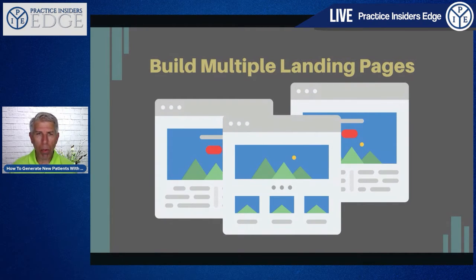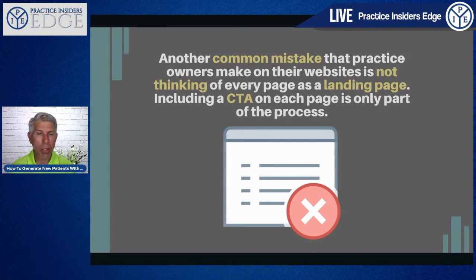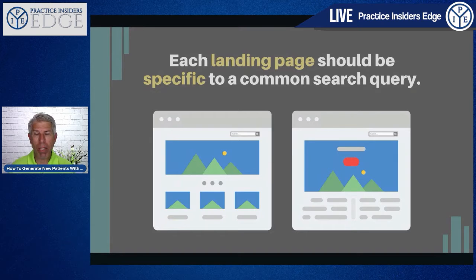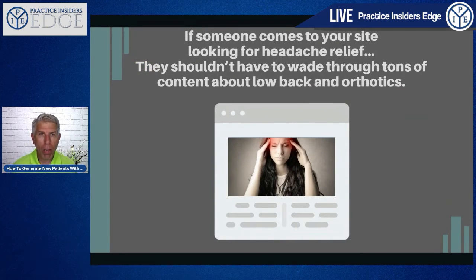Build multiple landing pages. A common mistake practice owners make is not thinking of every page as a landing page with a call to action. On your services or products pages, you should have a call to action to learn more about each service or product. Each landing page should be specific to each common search query — shoulder, neck, low back, knee, pregnancy, acupuncture, dry needling, orthotics — each page with its own search engine optimization and schema markup. It can be confusing if you try to pack too much information on a single page. If someone comes looking for headache relief, they shouldn't wade through content about low back and orthotics — let them read about headaches and how you get them relief.